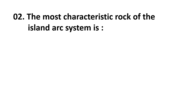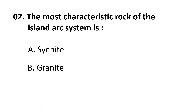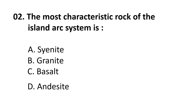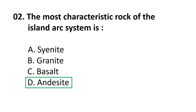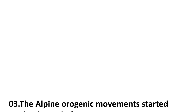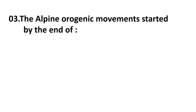Question 2: The most characteristic rock of the island arc system is — choices are: A) Cyanide, B) Granite, C) Basalt, D) Andesite. The correct answer is D) Andesite. Andesite is the very important and characteristic rock of the island arc system.